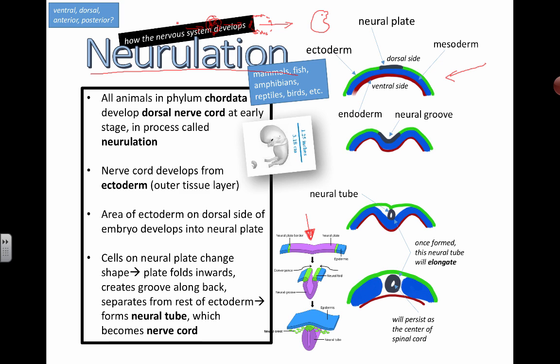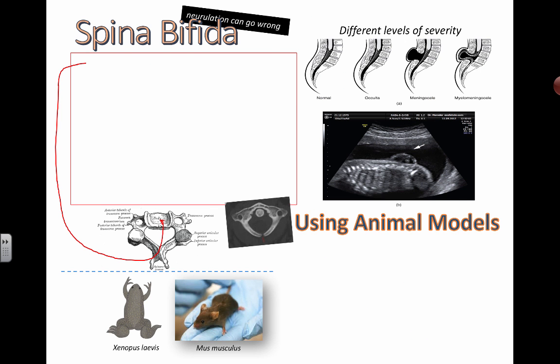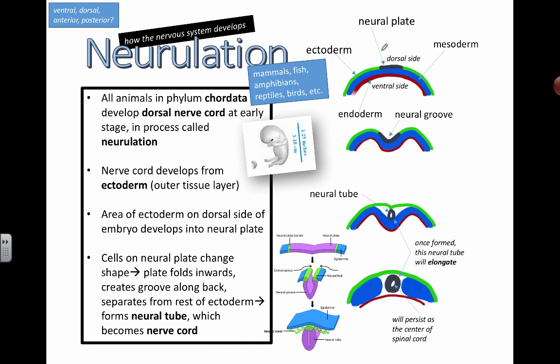So these layers, these colored layers here, are just representing the different layers that we've identified as humans and scientists trying to understand this process. So the ectoderm is the outermost layer. The endoderm is the innermost layer.